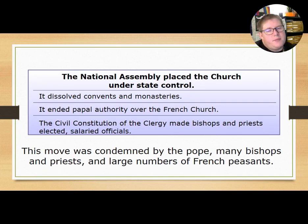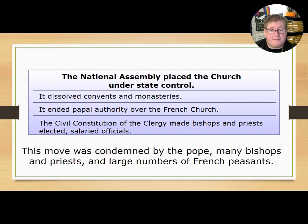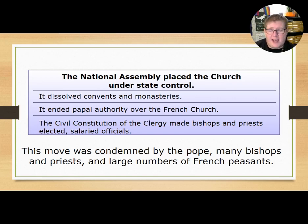The National Assembly also placed the church under state control. It dissolved many convents and monasteries, ended papal authority over the French church, and through the Civil Constitution of the Clergy, made bishops and priests elected, salaried officials of the French government. This was extremely condemned by the pope, many clergy, and a large number of French peasants who saw it as the government going too far.